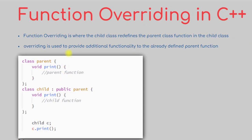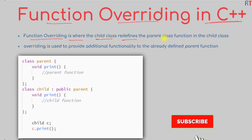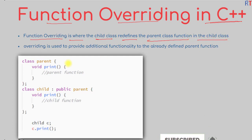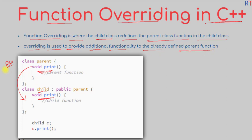In this video we're going to talk about function overriding in C++ programming. Function overriding is where the child class redefines the parent class function. For example, the child class is redefining the print function which is already defined in the parent class — this is called overriding. Function overriding is used to provide additional functionality to the already defined parent function, such as adding new features to the child class print function.